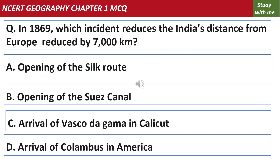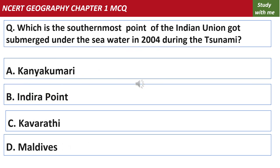In 1869, which incident reduced India's distance from Europe by 7000 km? The answer is the opening of the Suez Canal.